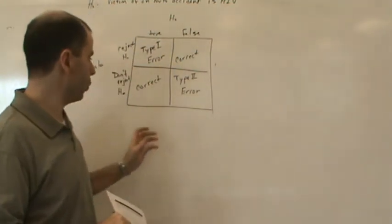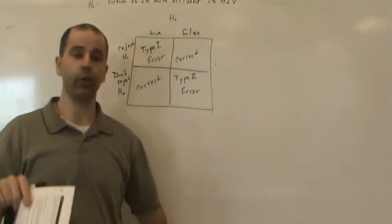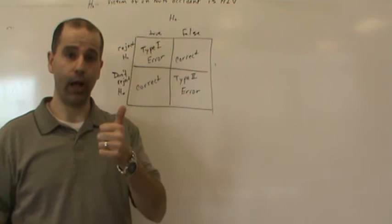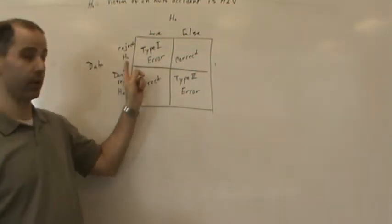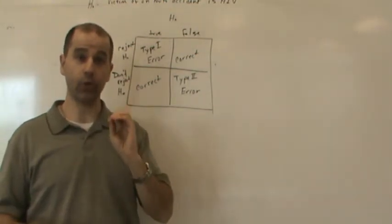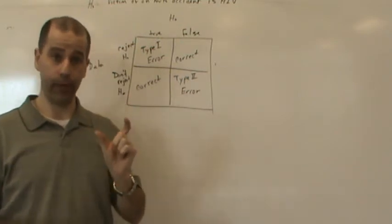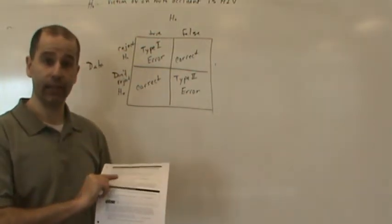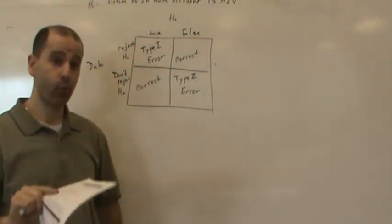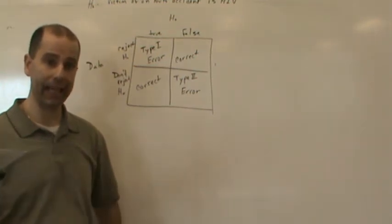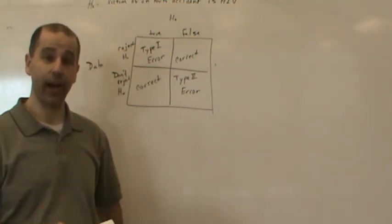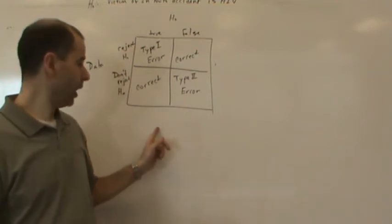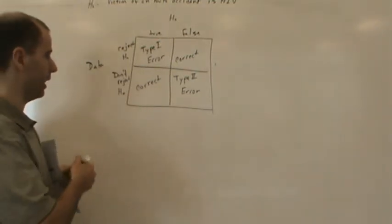Next, we'll start the full hypothesis testing procedure using examples, beginning with tests involving the mean. Alpha — the significance level — plays a key role. It's very important that the alpha level is established before any data is collected or analysis is done, because it determines when we reject or fail to reject the null.